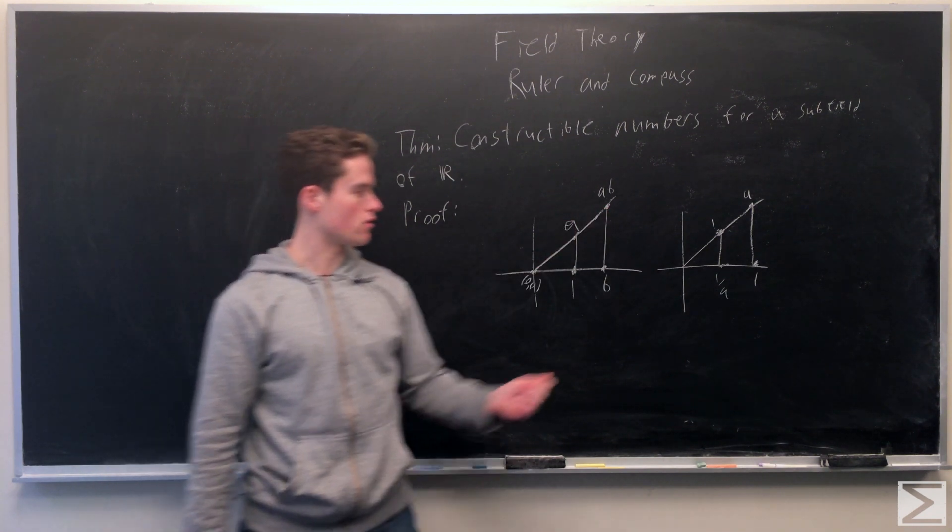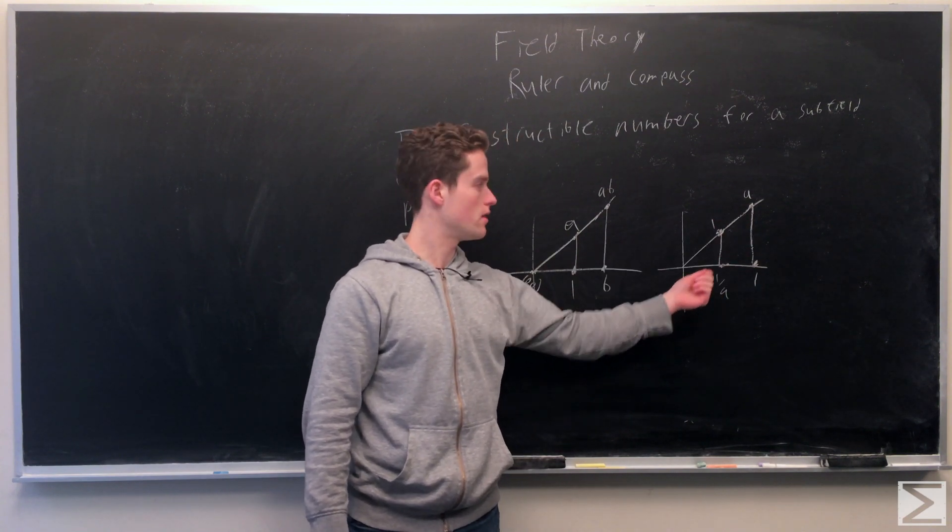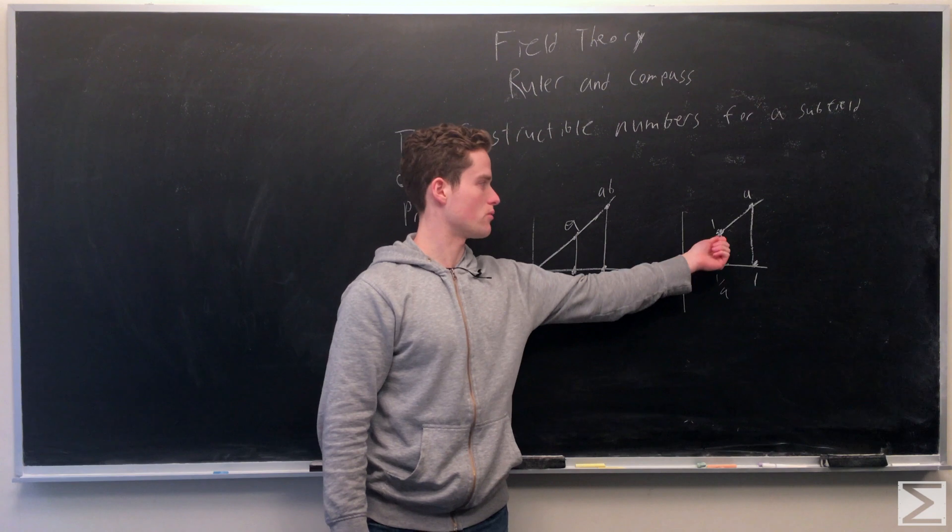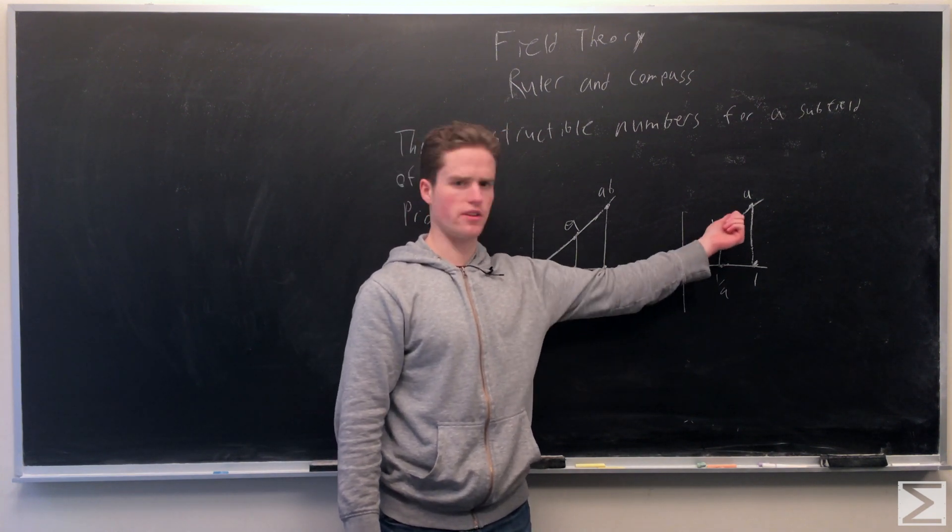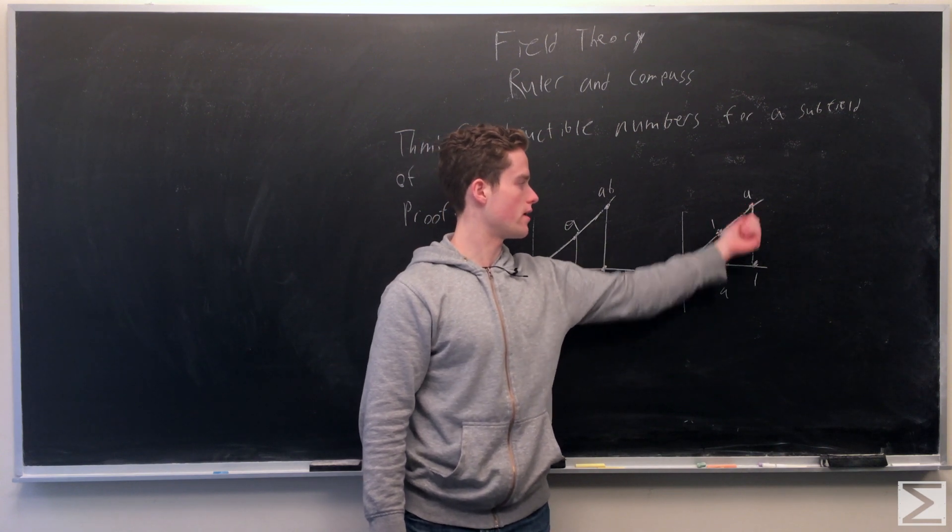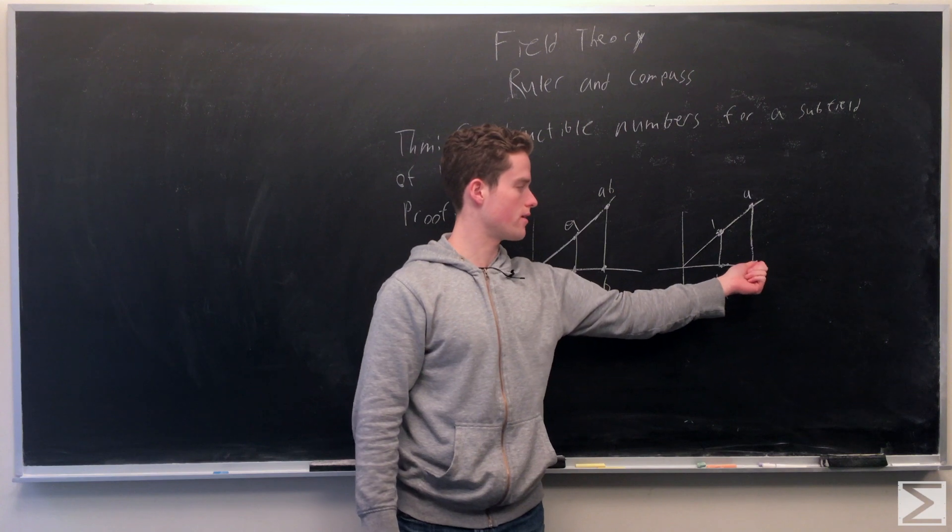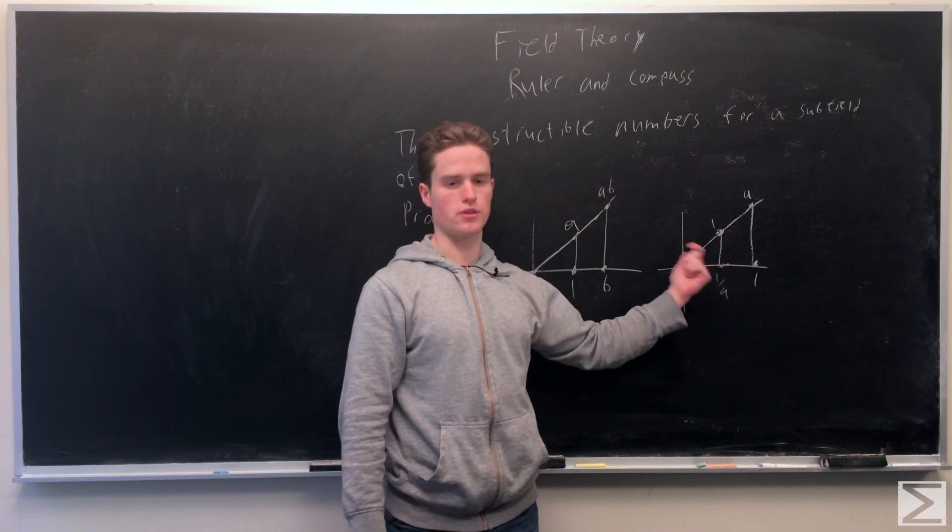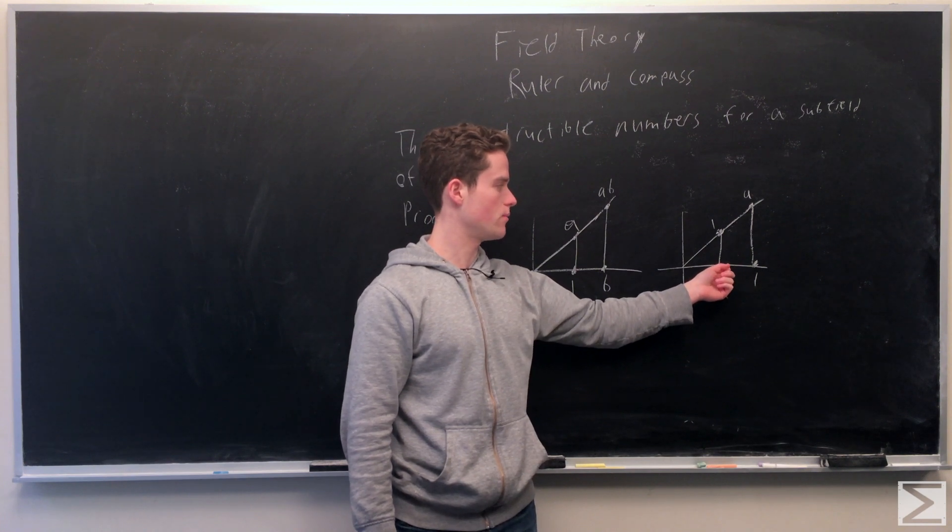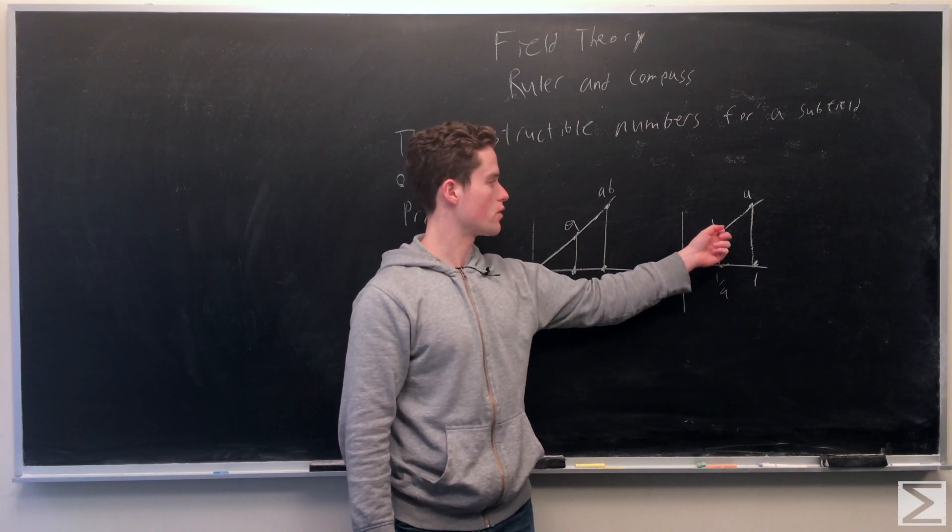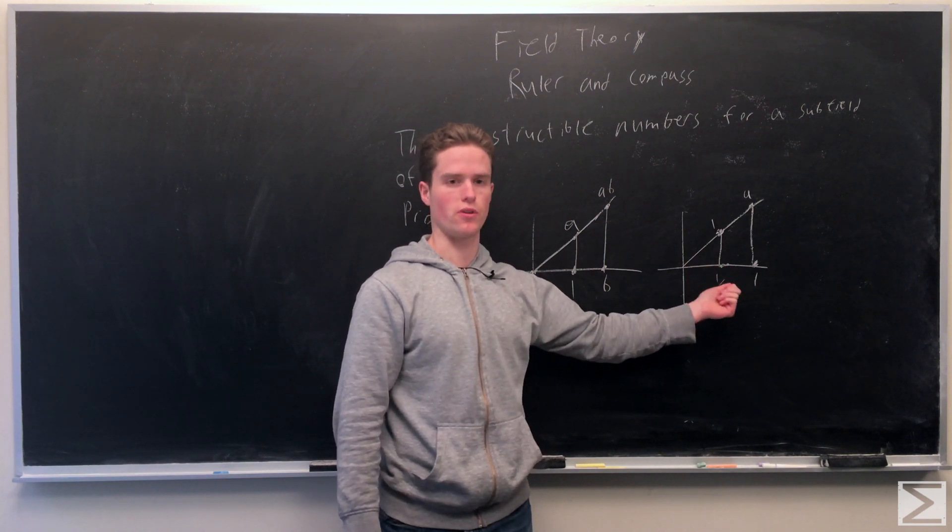We do a similar thing for the inverses. We have 1, A, and 1 over A is closer to the origin. We can make the point length 1 away from the origin on this arbitrary line, length A away, also on this bottom line here. Once again, we're going to construct a parallel line, and we get this point here that intersects going through 1, intersects the bottom line. It will be 1 over A away from the origin. 1 over A will also be constructible.